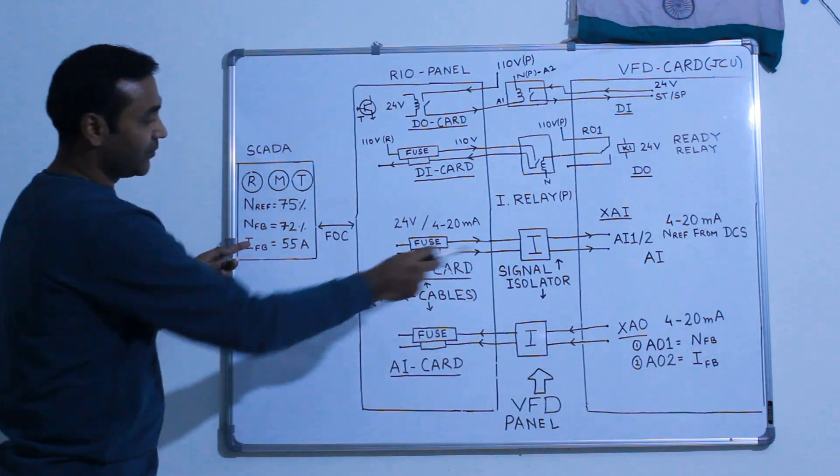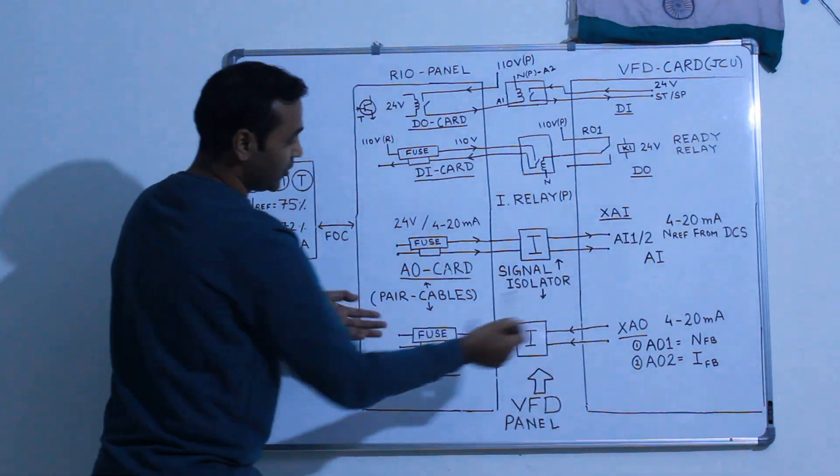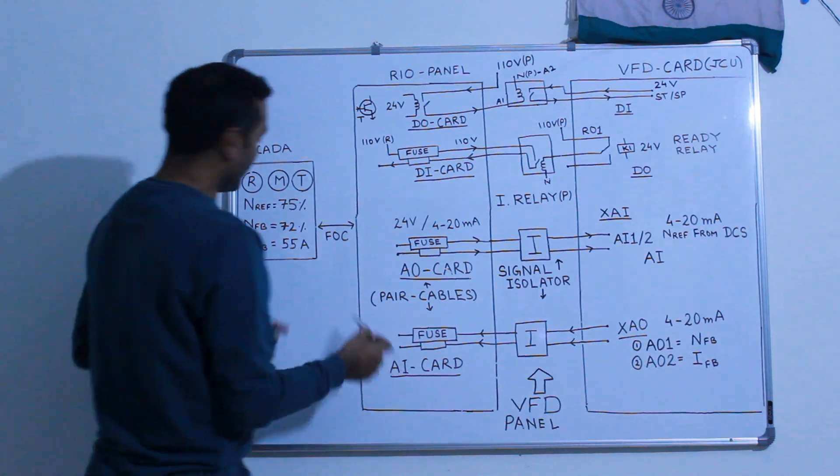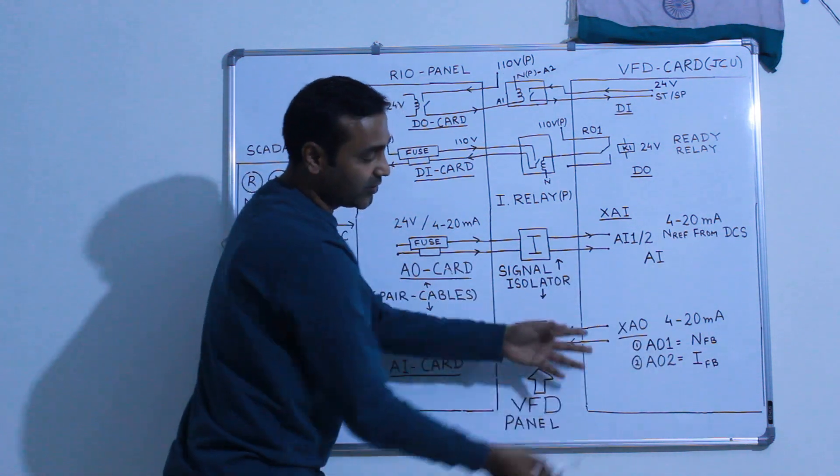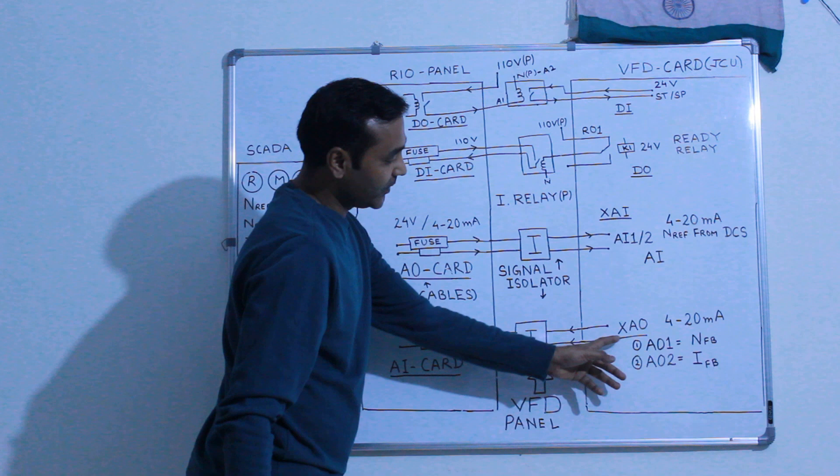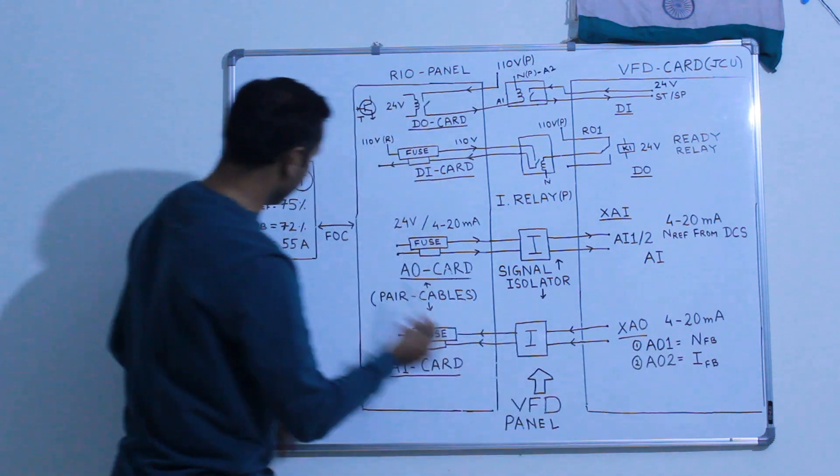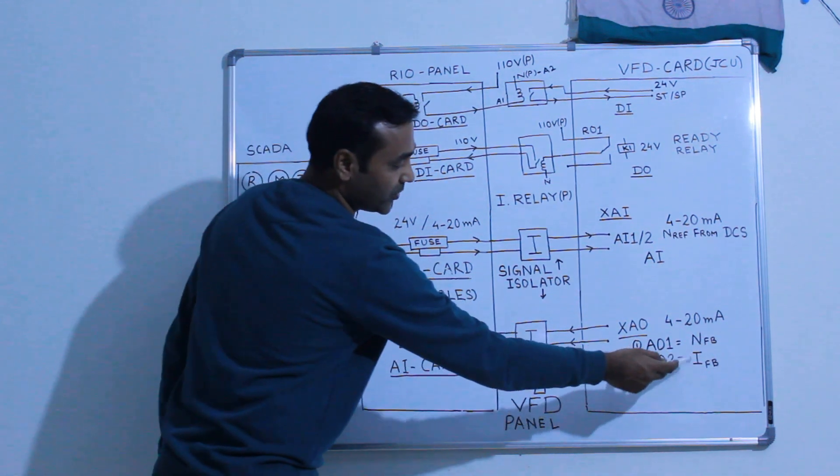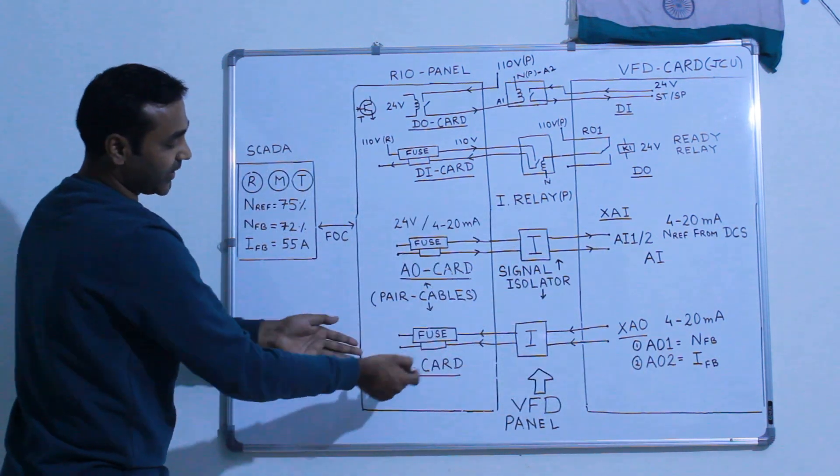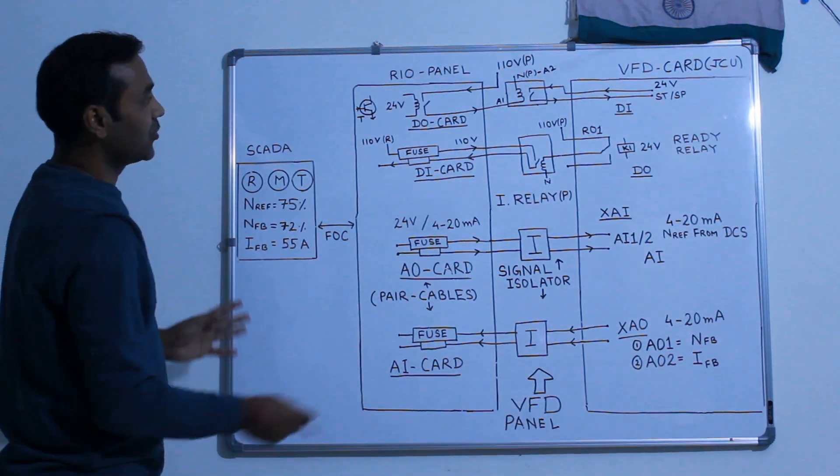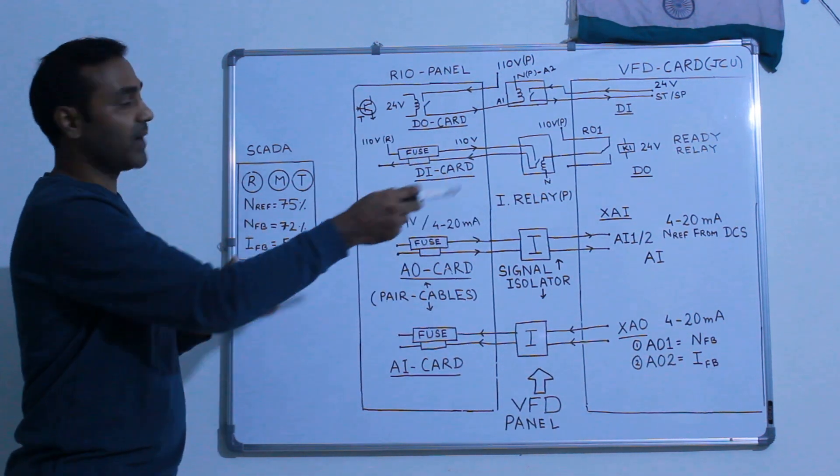Now since the drive is running, the drive has to give feedback that will come back to SCADA, from VFD to RIO and RIO to SCADA. First one is 72 percent speed feedback. Similarly like how it was generating, the card will also generate internally. There will be two different slots - analog output 1 for speed feedback 72 percent, and analog output 2 for current feedback. Similarly it will flow back, it will get here, and from this card it will come back to the SCADA. That's how all these four signals flow between RIO panel to card and to SCADA back and forth.